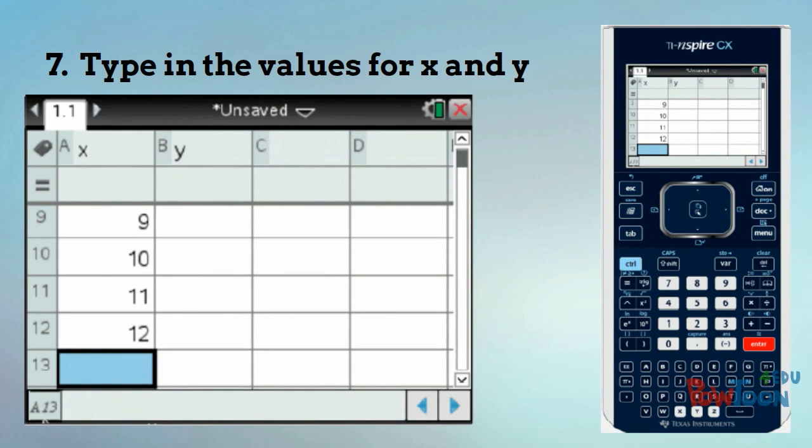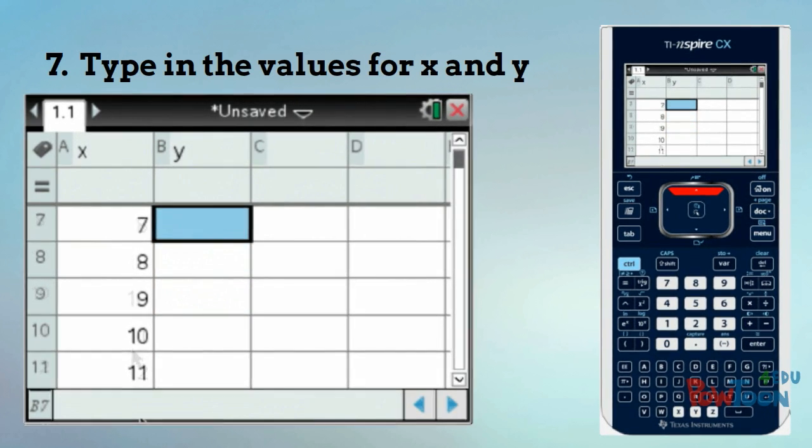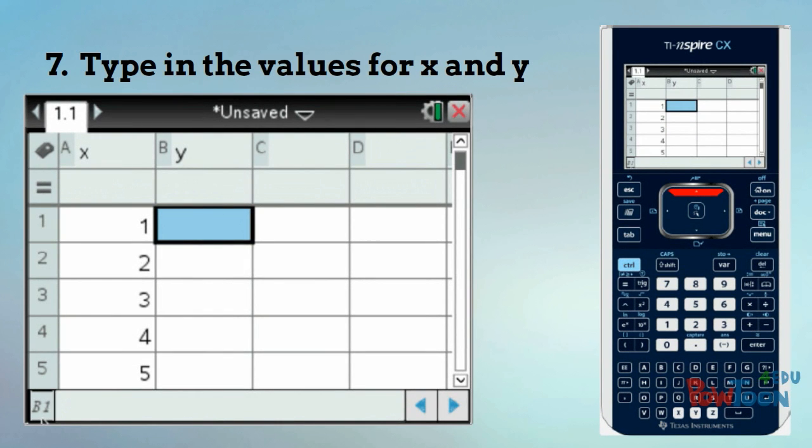Then use the arrow keys to get to the top of the data of the Y values. In this example, I've decided to use the average monthly high temperatures for Atlantic City, New Jersey, because why not?